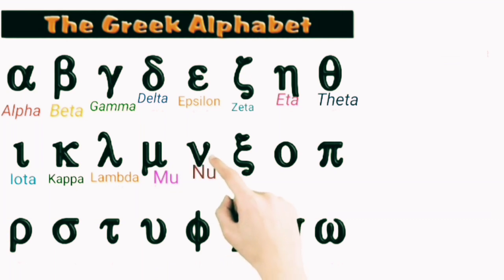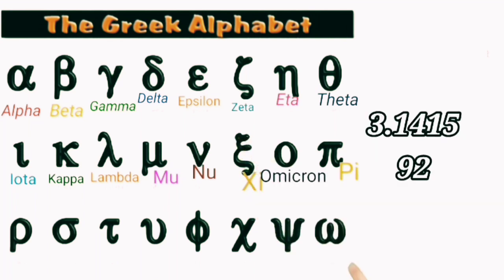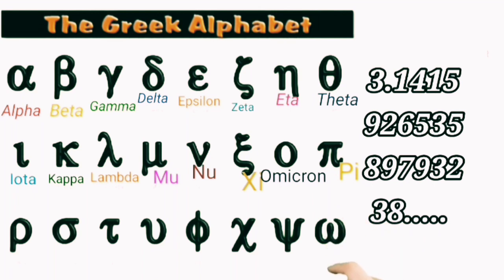This is nu, this is xi, omicron, pi: 3.14159265358.